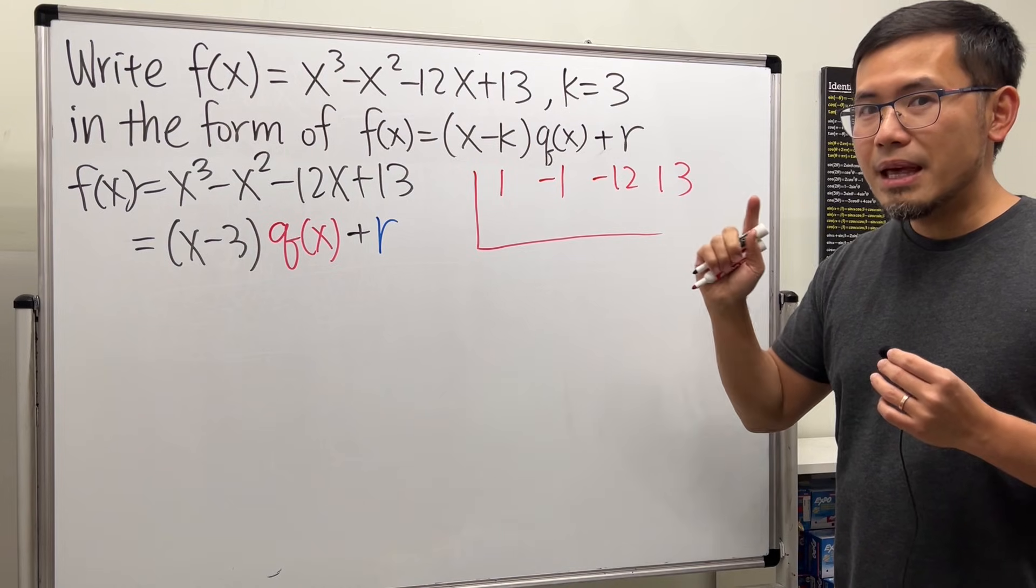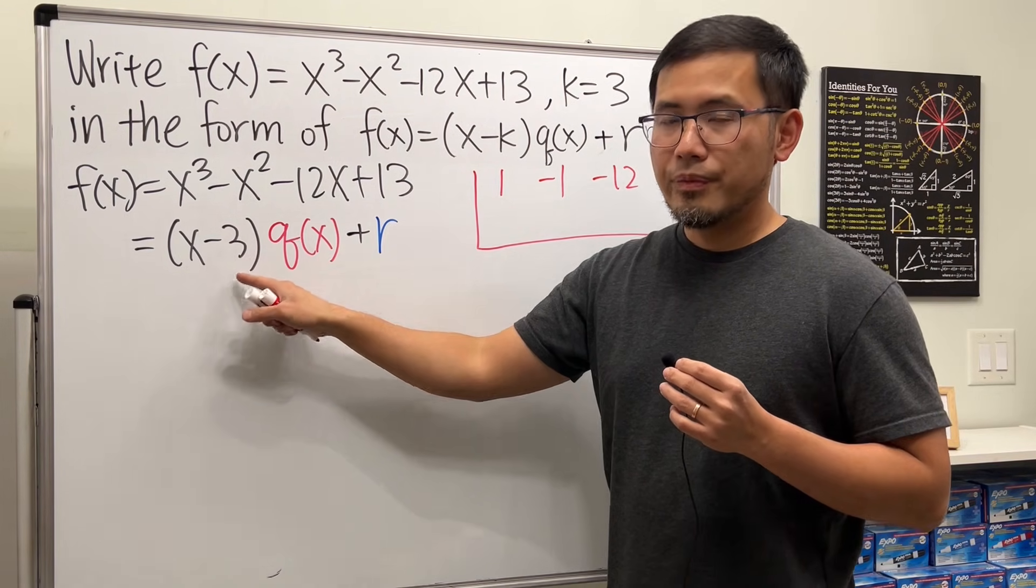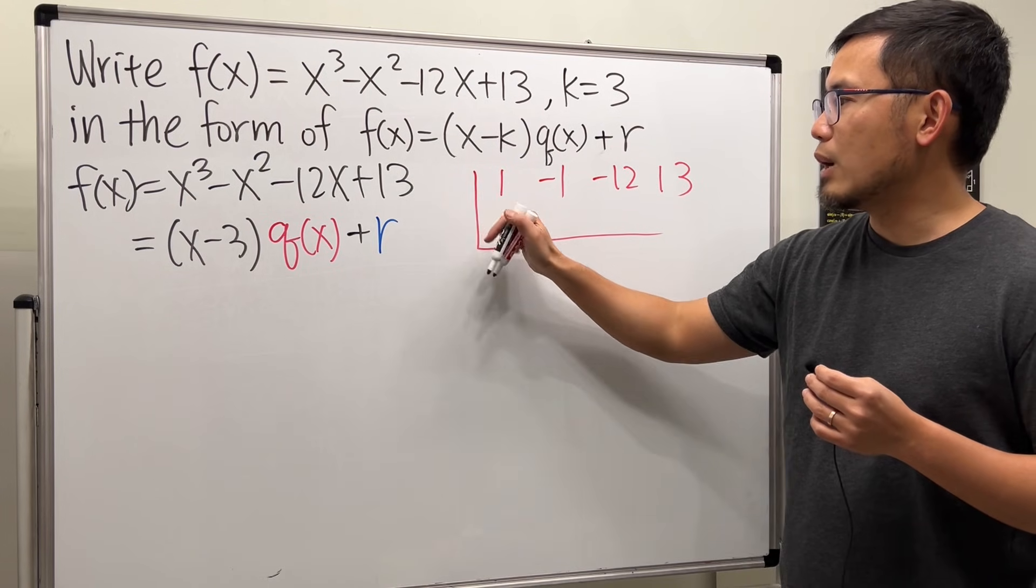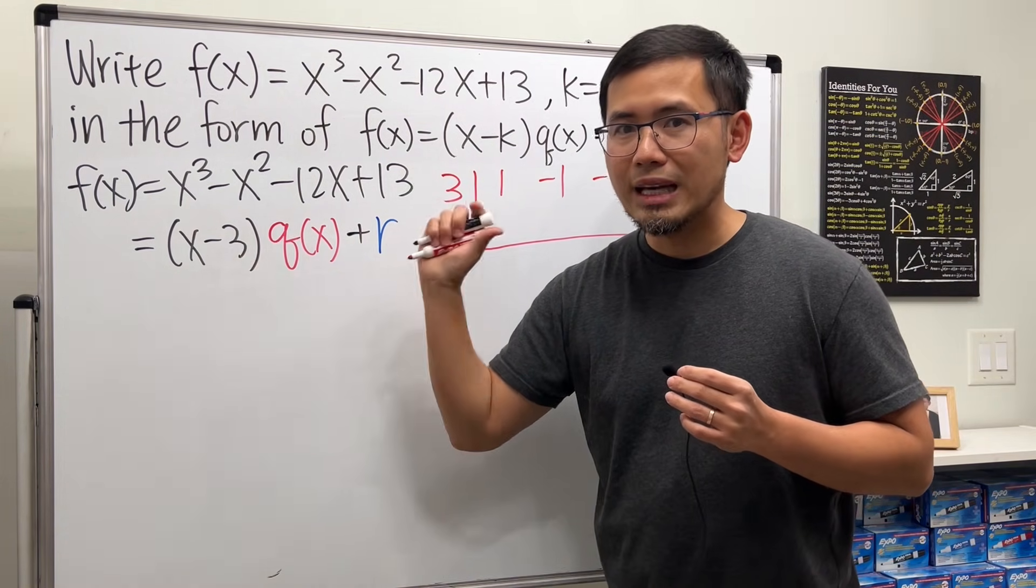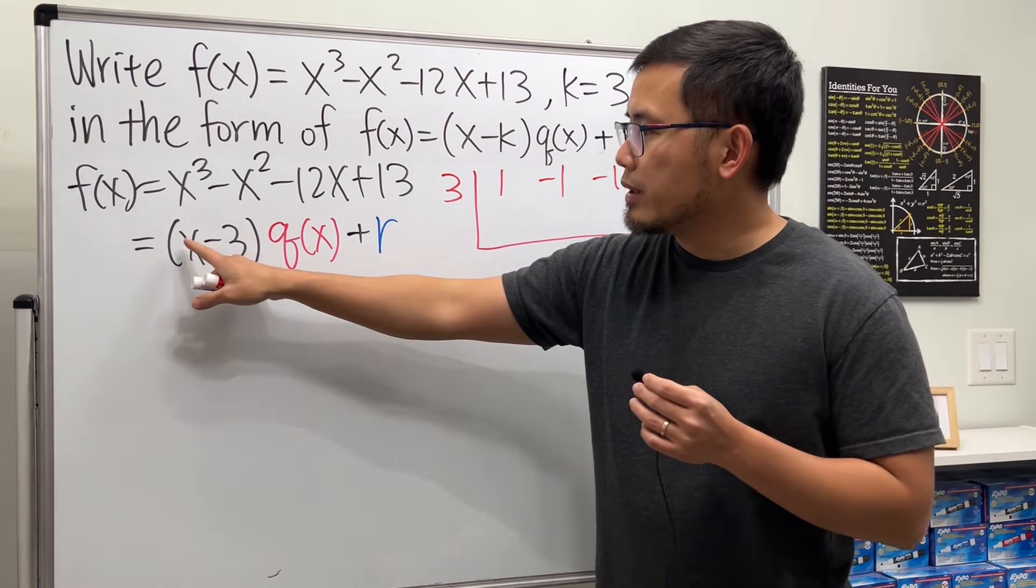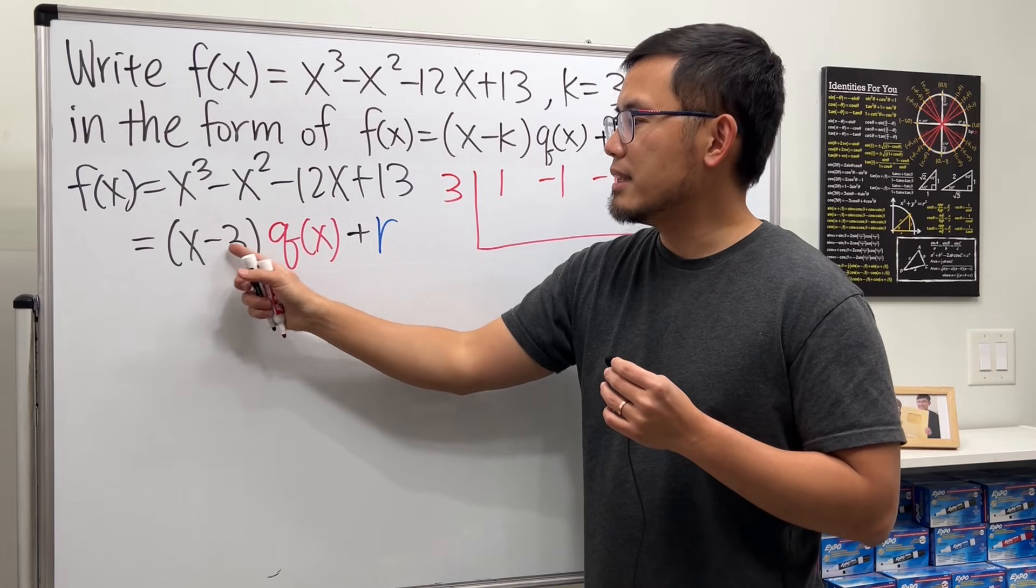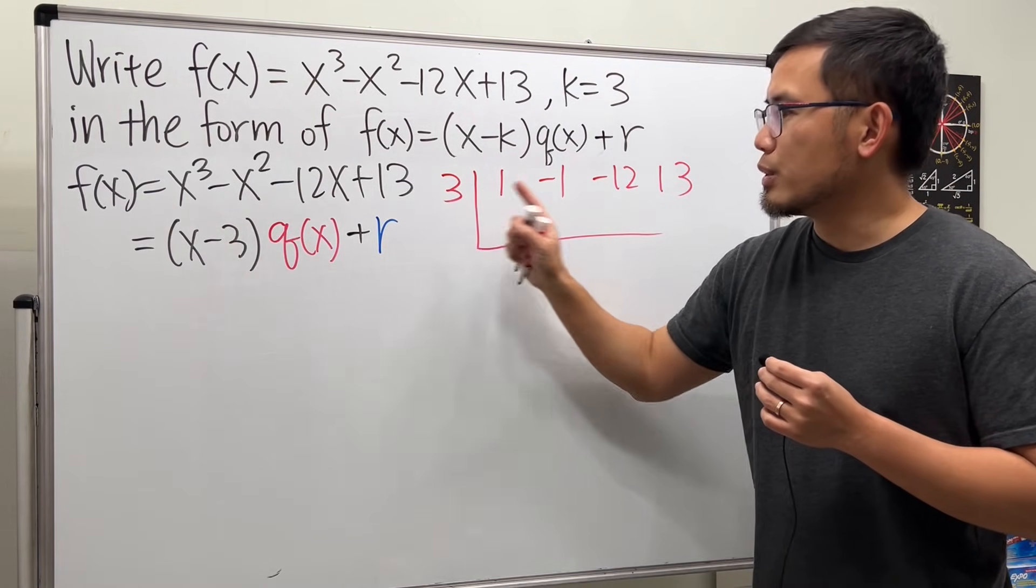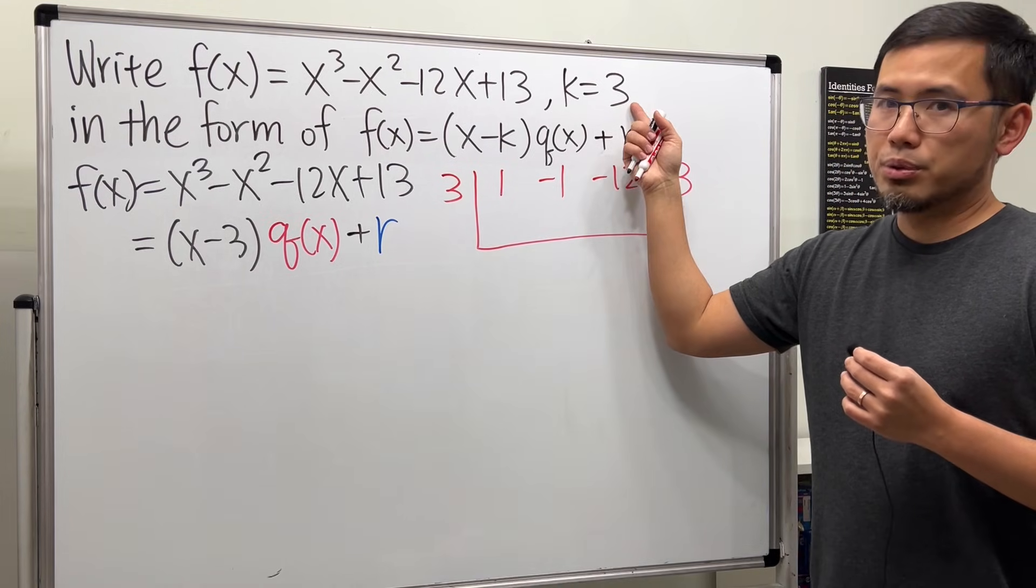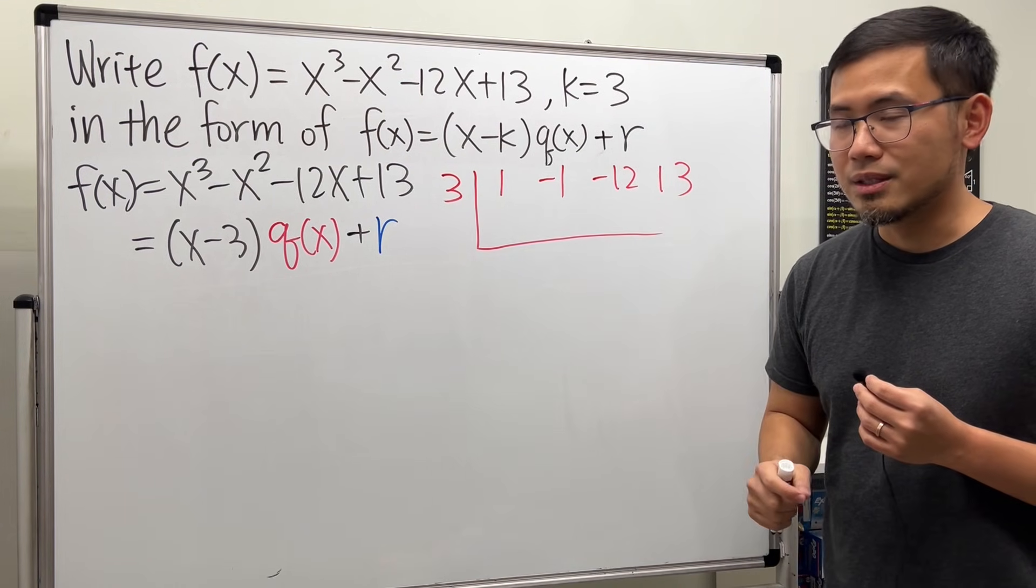So that's the first setup. And then, because we are dividing by x minus 3, go ahead and put down a 3 on the outside. Whatever you see right here, just do the opposite. And this only works when the coefficient is 1 right here, like 1x minus a number, or 1x plus a number. Just put down the opposite right here, or you can just think about it as putting down the k value here. All right, that's the setup, and now this is how it works.